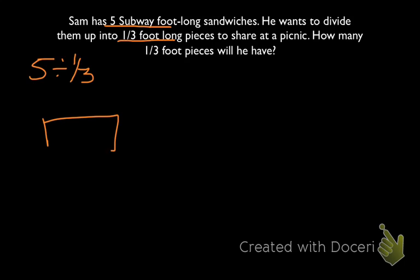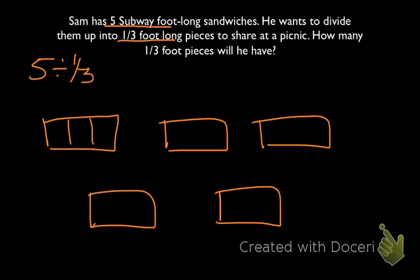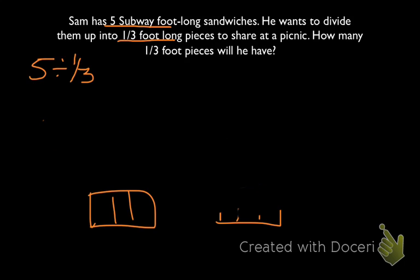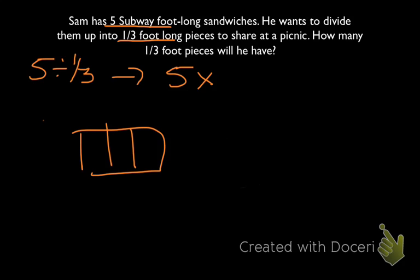If we were to go the old way with models, we could just draw 5 models, 5 holes here. Divide them up into thirds. We could represent this as a multiplication equation, where if the numerator is 1 in the fraction, what we can do is represent this as the equation where it's 5 footlongs times 3 pieces. 1, 2, 3 per hole will give us 15 total pieces.